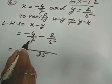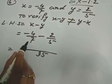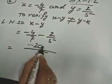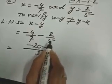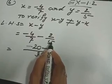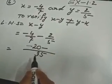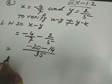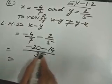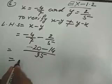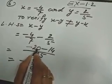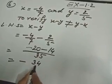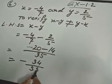LCM of 7 and 5 will be 35. 35 divided by 7 is 5; 5 into minus 4 is minus 20. Minus 35 divided by 5 is 7; 7 into 2 is 14. So minus 20 minus 14 — both are negative. We will add 20 and 14, that is 34, and give the negative sign. So it will be minus 34 by 35.